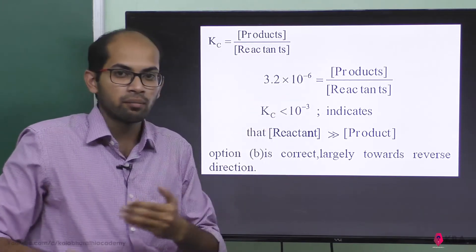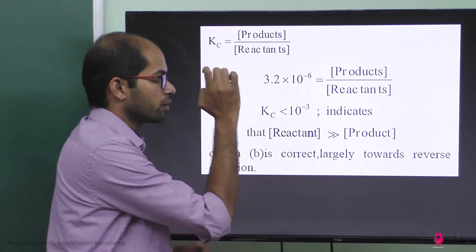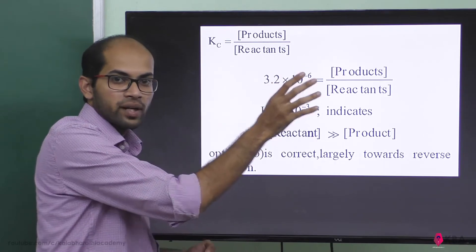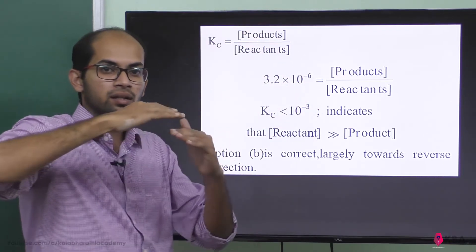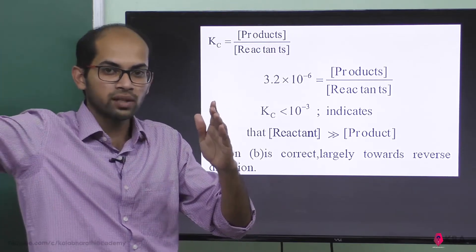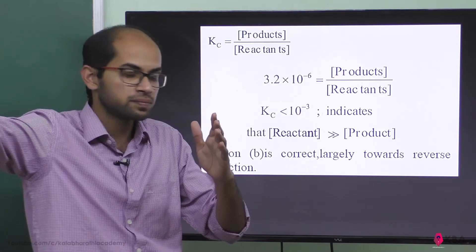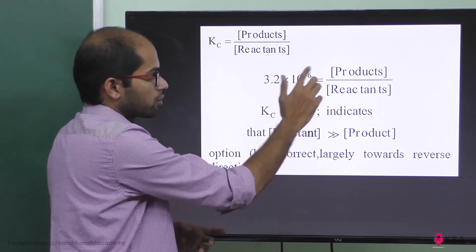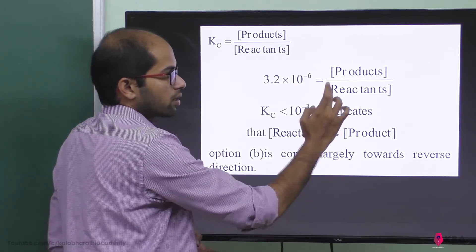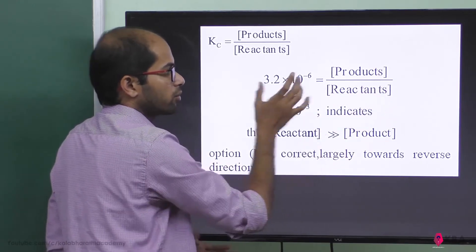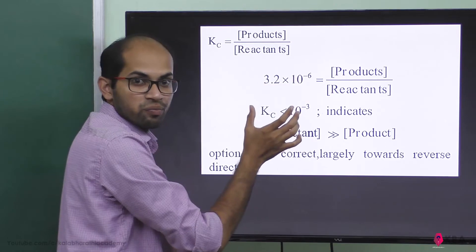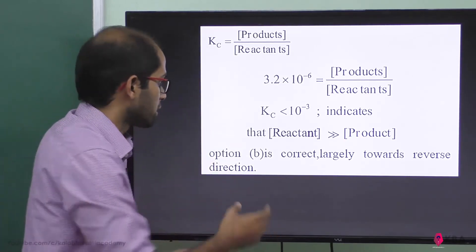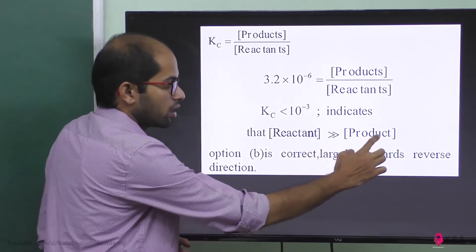10 to the power minus 6 is less than 10 to the power minus 3. Going from minus 6 to minus 3, the value increases, so 10⁻⁶ is the smaller value. The smaller value is the numerator — products — and the larger value is the denominator — reactants. Therefore, the concentration of reactants is greater than the concentration of products.